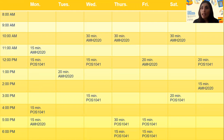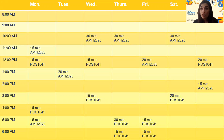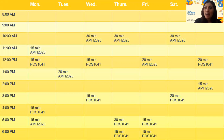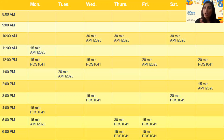Here is a sample study schedule I put together for two finals: AMH 2020 and POS 1041. I've scheduled 15-to-30-minute blocks spread throughout the week. When you add it all up, it comes to about three hours of study time for each class — which is substantial. If you tried to do three hours straight for one class, you'd likely get distracted and retain less. Spreading those same three hours across short, focused sessions is far more beneficial both for the test and for retaining that knowledge long-term.